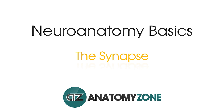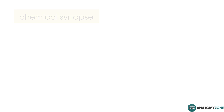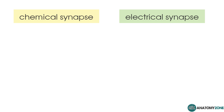Hi, this is Peter from AnatomyZone and in this Neuroanatomy Basics tutorial, we're going to take a look at the structure of the synapse. There are two types of junctions between neurons: chemical synapses and electrical synapses.